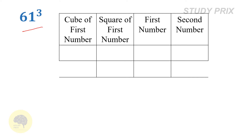Let's solve another Type 2 problem. The problem is to find the cube of 61. Write first number 6, second number 1. In the second column, write the square of the first number: square of 6 is 36. In the first column, write the cube of the first number: cube of 6 is 216. In the two middle cells, double the upper number: double of 6 is 12, and double of 36 is 72.